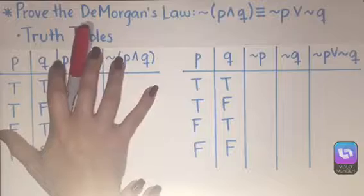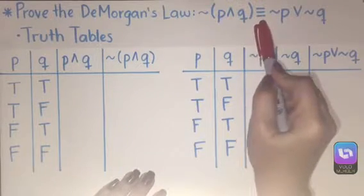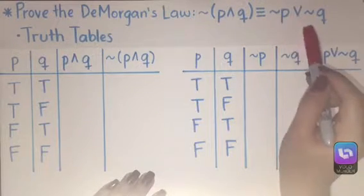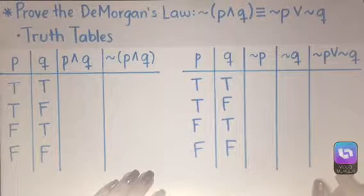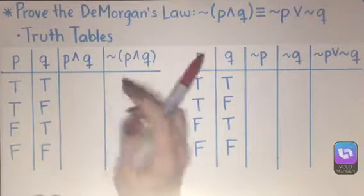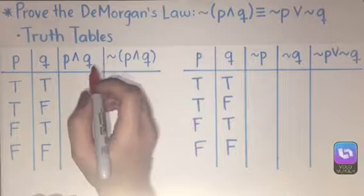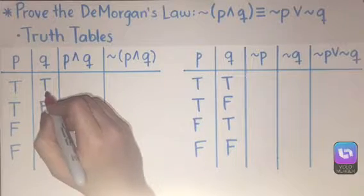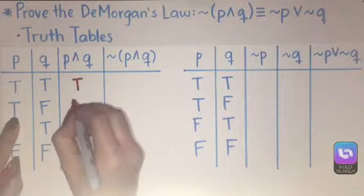This is our truth table for the left side of the statement, negation of (P and Q). We need to find P and Q first because that value is what's going to be negated. By the laws of conjunction, P and Q is only true when both P and Q are true. So when P is true and Q is true, that is the only moment this statement is true; the rest are false.